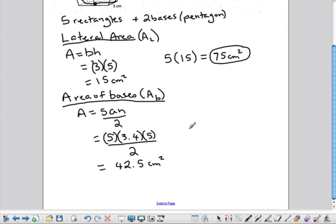Now, I have two bases, so over on the side here, I'm going to multiply two times forty-two point five, which gives you eighty-five square centimeters. It's important to keep these things organized. This is very clear.